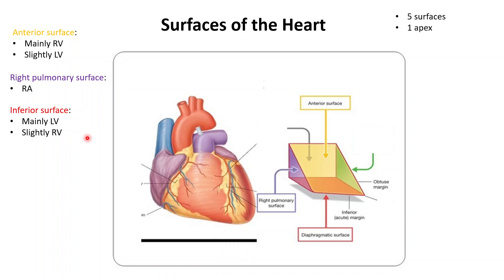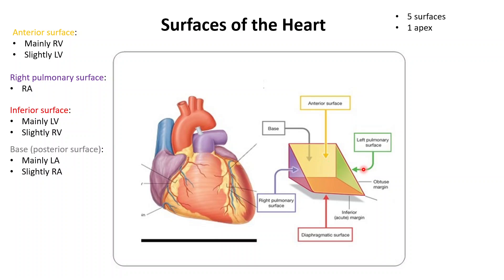The posterior surface, also called the base, is mostly made out of the left atrium and partly the right atrium. The left atrium has the pulmonary veins going into it, and the right atrium has the superior and inferior vena cava going into it. The left pulmonary or lateral surface is mostly made out of the left ventricle and partly made out of the left atrium.